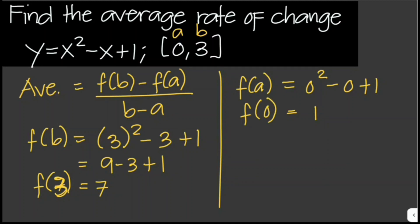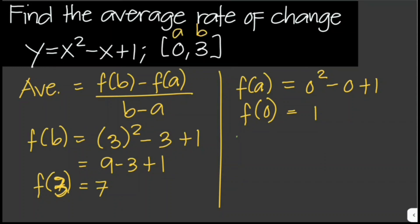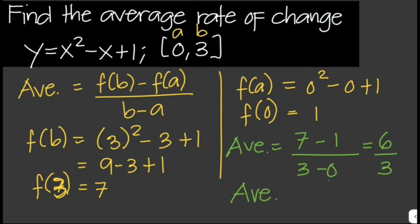f of 0 equals 1. Now we can plug everything into the formula. The average equals f of b, which is 7, minus f of a, which is 1, over b minus a, which is 3 minus 0. So this is 6 over 3. The average is equal to 2.